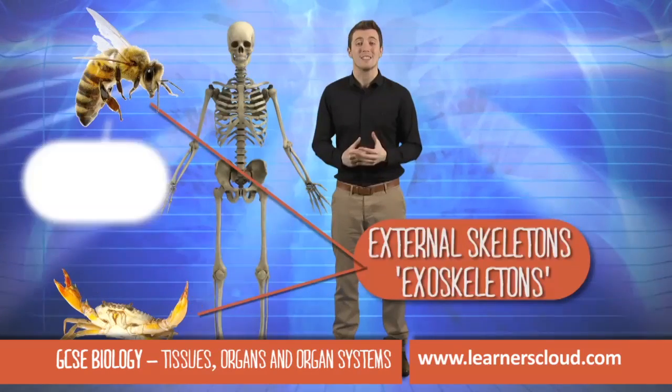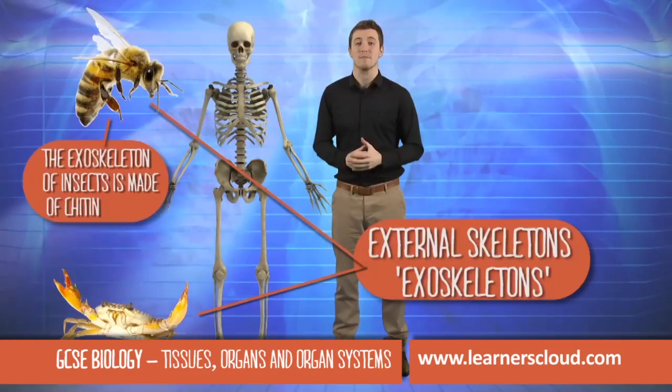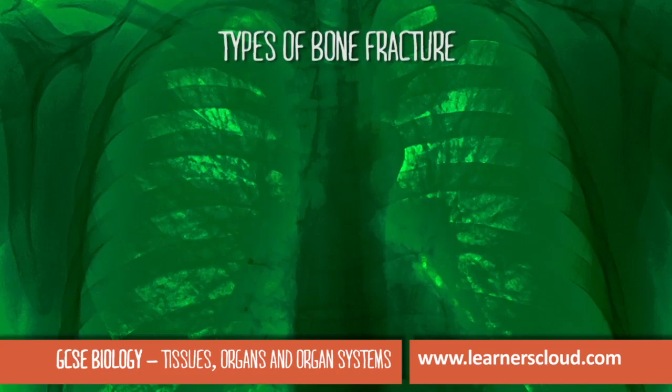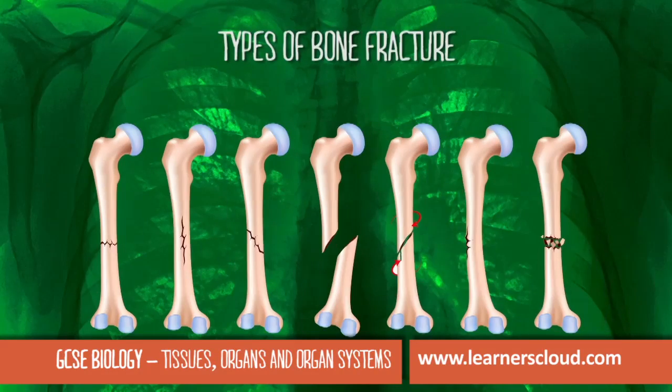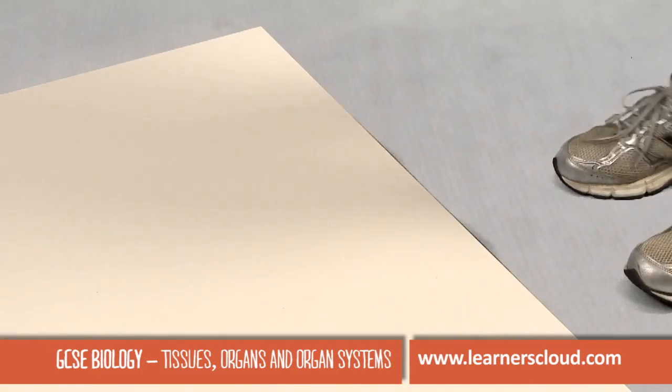We have external skeletons known as exoskeletons. It's important to know what type of fracture a person has got so that we can treat it accordingly.